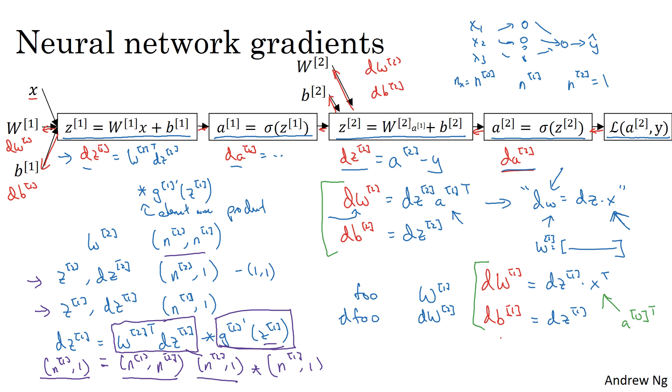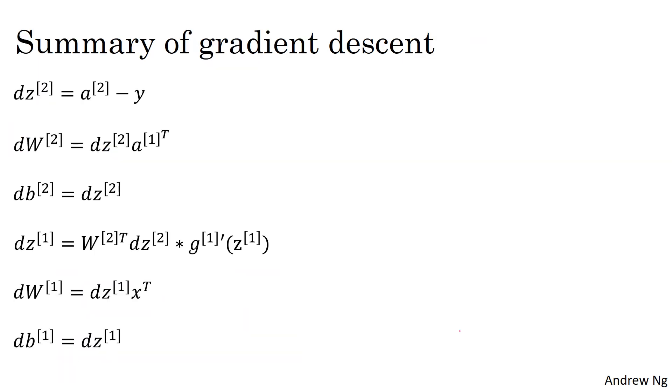So that gives a sense for how backpropagation is derived. We have six key equations here for dz2, dw2, db2, dz1, dw1, and db1. So let me just take these six equations and copy them over to the next slide. Here they are.